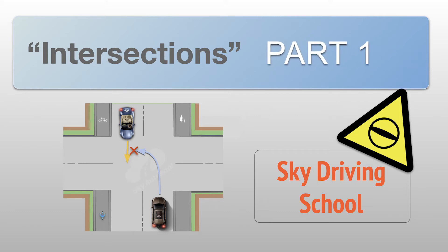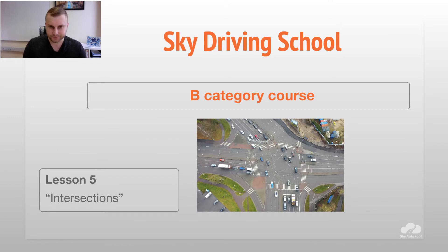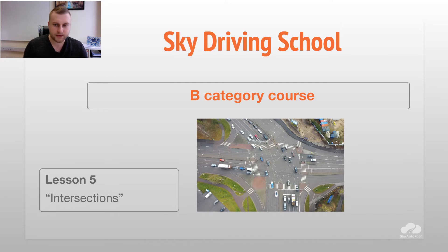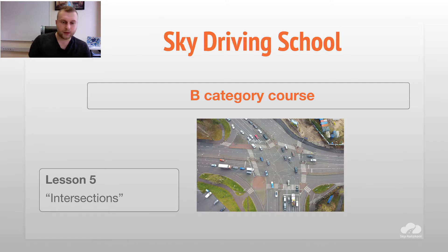Greetings everyone, it's Vadim here again. Today we are going to observe lesson number five in the theory course. We are going to talk about intersections, the rules that apply at crossroads, how to give way in different situations, and when we have to give way to pedestrians. Robots are a brand new thing in our country, especially in Tallinn, and we also have new traffic act regulations about that.